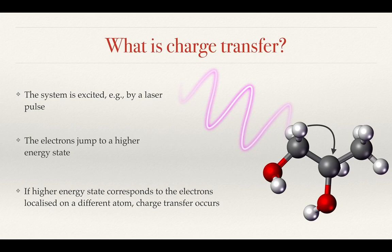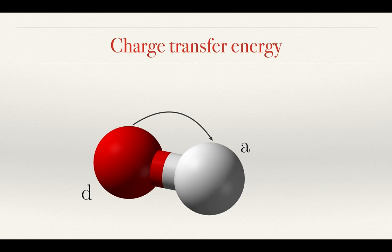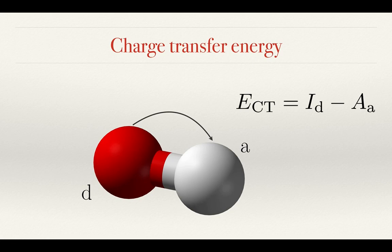Imagine an asymmetric diatomic molecule that's excited by a laser. In this case, charge is transferred from one atom to the other. However, the charge transfer energy, assuming the atoms are quite far apart, is the difference between the energy to remove an electron from the donor atom and the energy to add an electron to the acceptor atom. In other words, the ionisation energy of the donor atom minus the electron affinity of the acceptor atom.